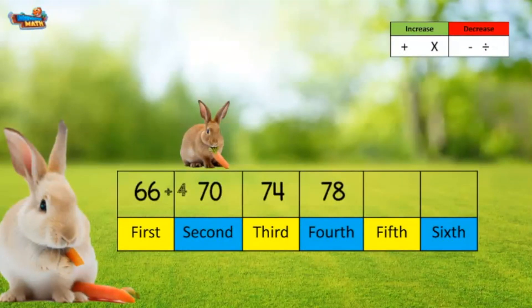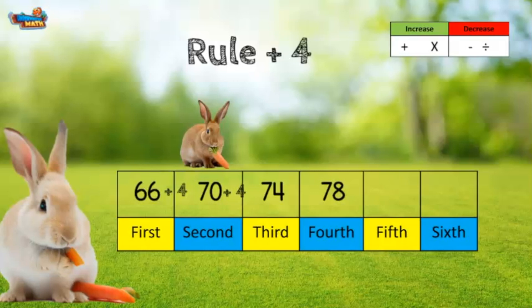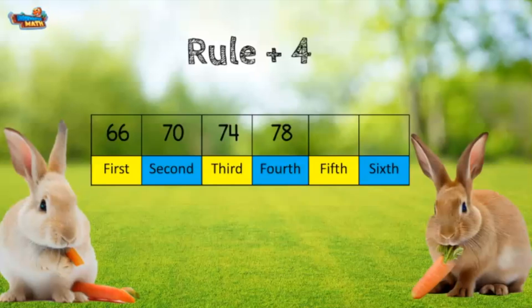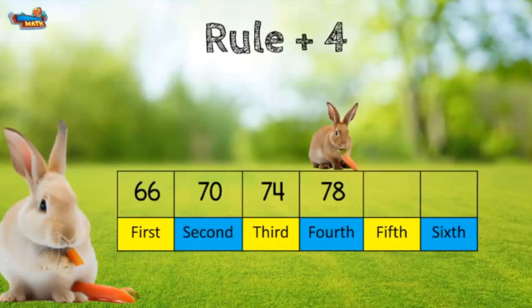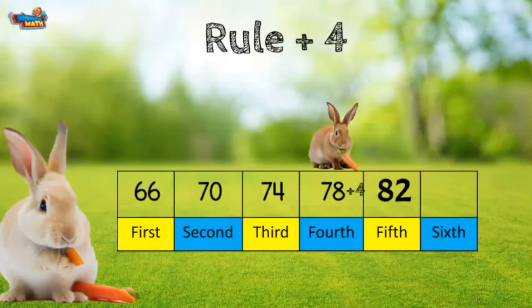I need to check and see if the rule works for the rest of the pattern. If I add four to 70, I get an answer of 74. The rule for this pattern is plus four. Now we will extend the pattern by finding the value of the numbers in the fifth and sixth positions. To do this, we add four to the number in the fourth position, which gives us an answer of 82.